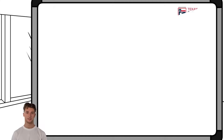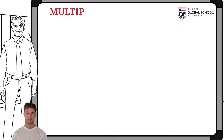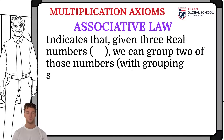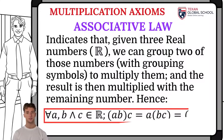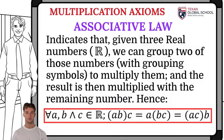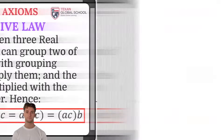The associative law indicates that, given three real numbers, we can group two of those numbers with grouping symbols to multiply them, and that result is multiplied with the remaining number. Let's look at an example.